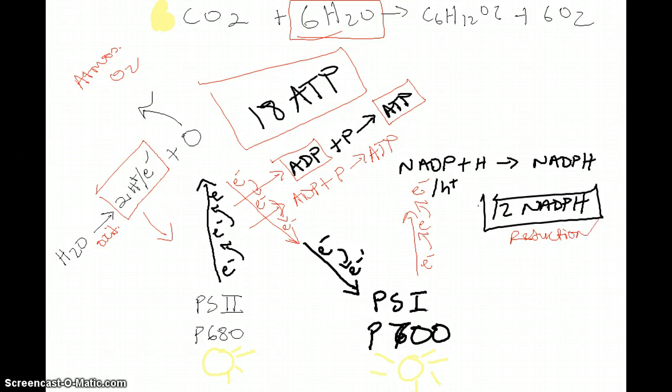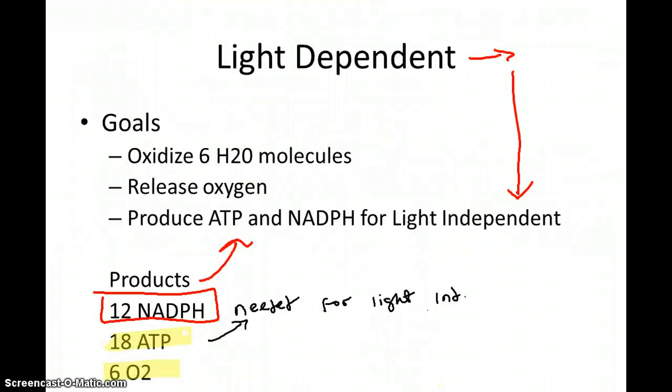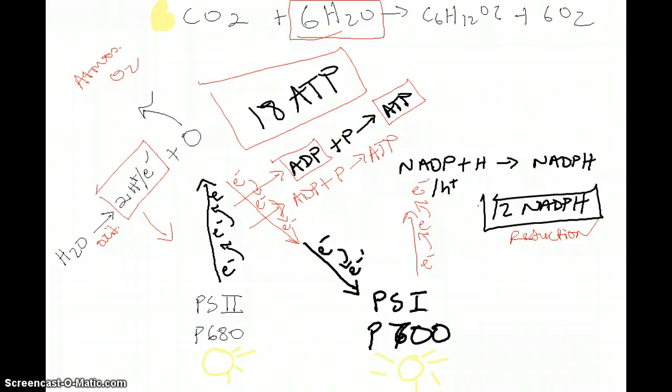Remember, reduction is gain electron. So there we have our next product, 12 NADPH. And that is simply what the light-dependent reaction is. Now the 18 ATP and the 12 NADPH are used to go into the light-independent reactions.